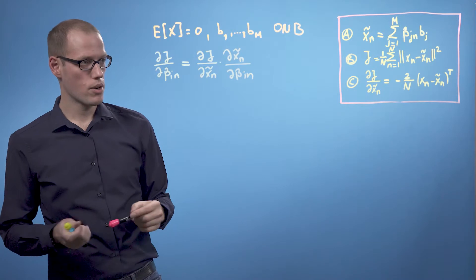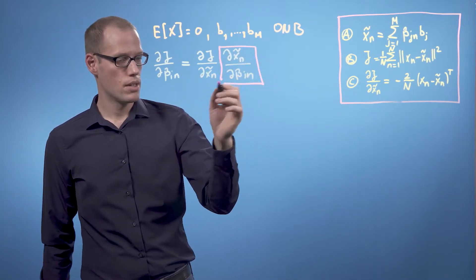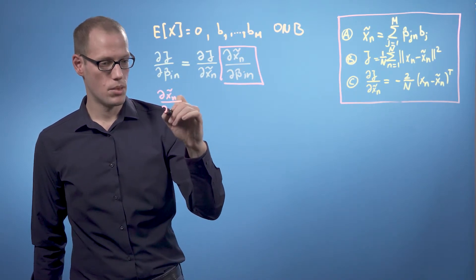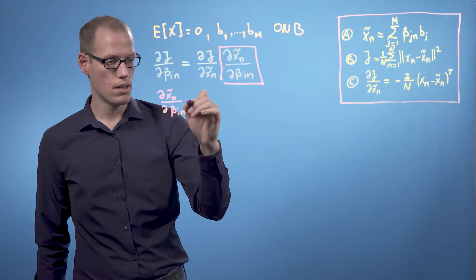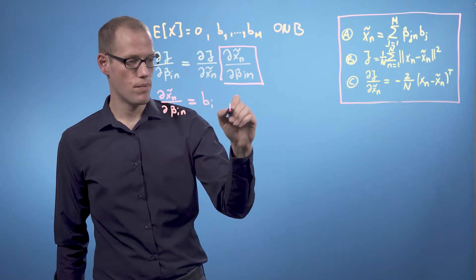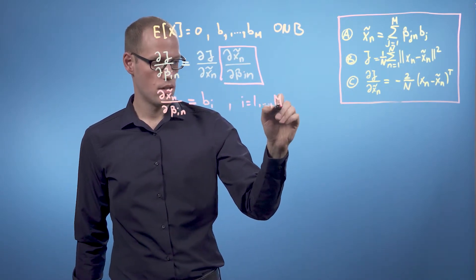So now we are going to have a closer look at this one here. So dxn tilde by dbeta in is simply given by bi for i equals 1 to m.